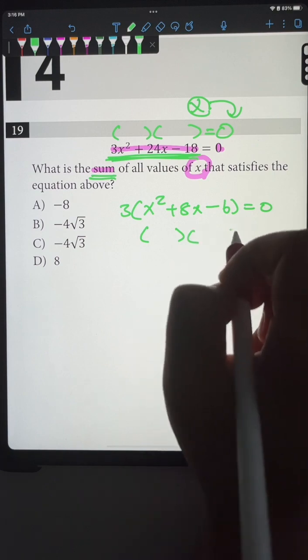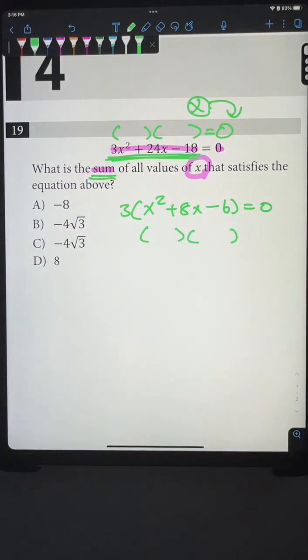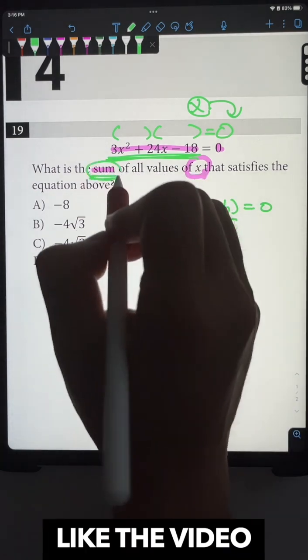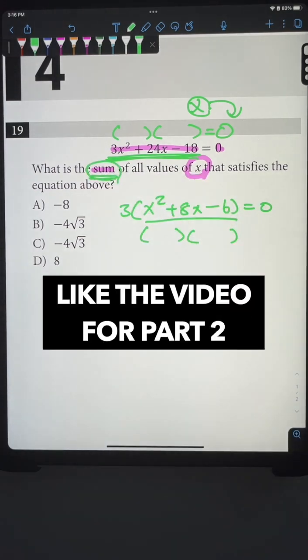And when we try to factor out this portion, no matter what you do, this is not going to be factorable. Again, why? Because the SAT is specifically asking you to find the sum.